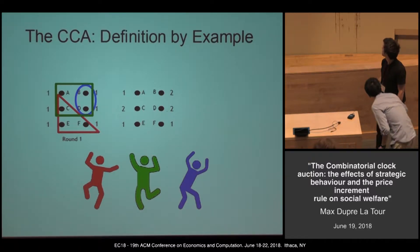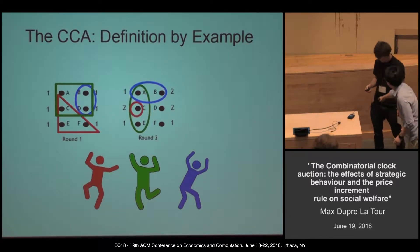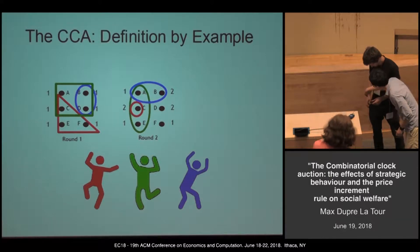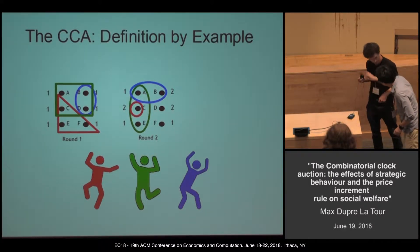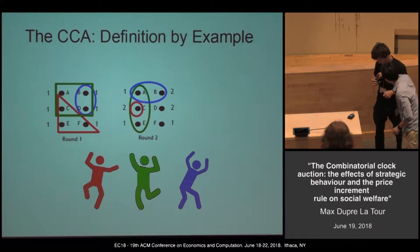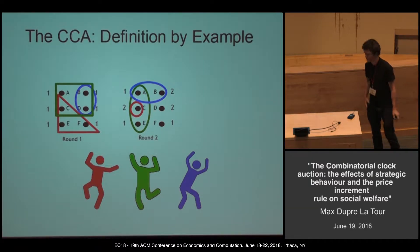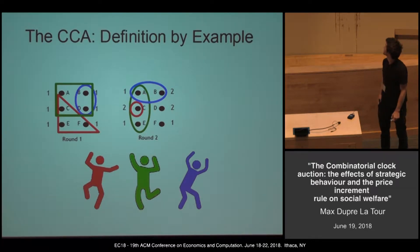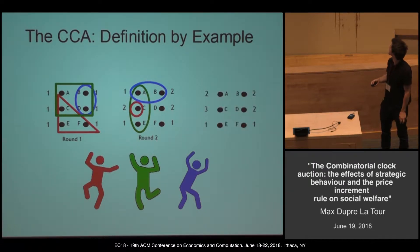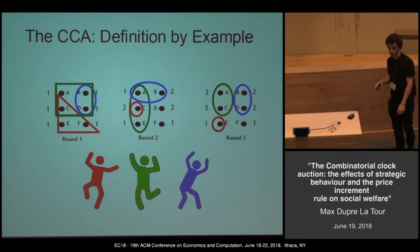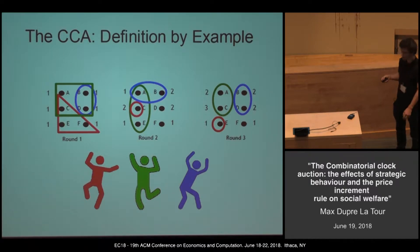We keep going, so they make another bid. Here we have excess demand on A and C, so the price on those items is incremented. Here the bids are disjoint, so we stop the auction, and this is the final allocation.